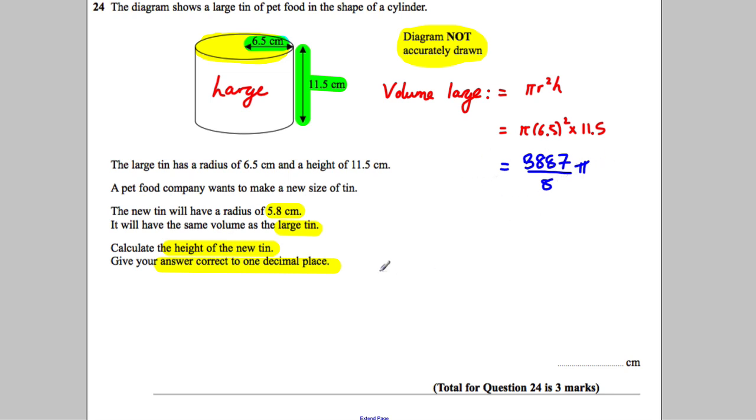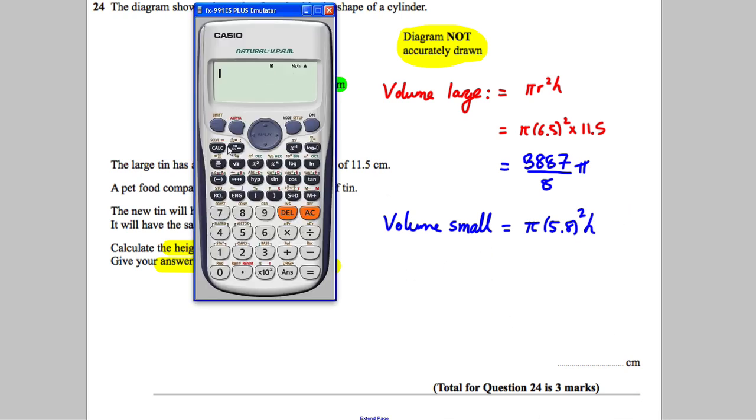Now the volume of the small cylinder is going to be πr²h with the new height h. So it's going to be π × 5.8² × h for this new h that we don't know.